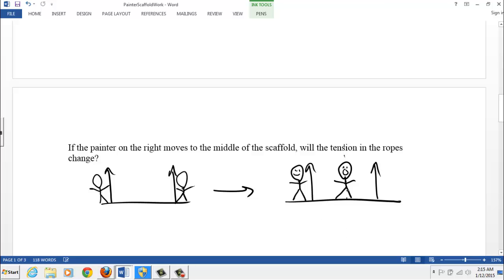Over here, if you look at this left-hand side, this rope is trying to support both painters. And on this side, this rope is kind of supporting like half the painter. So the tension on the left rope is going to increase and the tension on the right rope is going to decrease, it's going to go down.